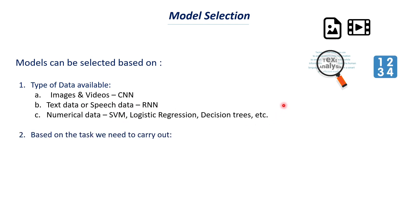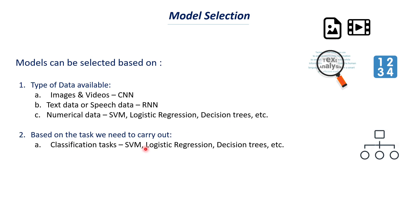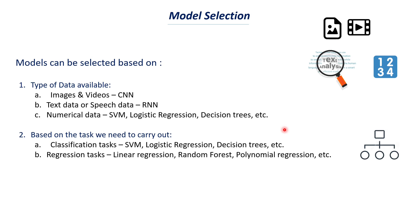Now let's discuss how to choose models based on the task. For a classification task, we may use a support vector machine, logistic regression, or a decision tree. Classification means we need to classify something — for example, predicting whether a person has diabetes or not. That is a classification task with two output variables. For regression, where we try to find a numerical value such as predicting a car price based on its parameters, we may use linear regression, random forest regression, polynomial regression, and so on.